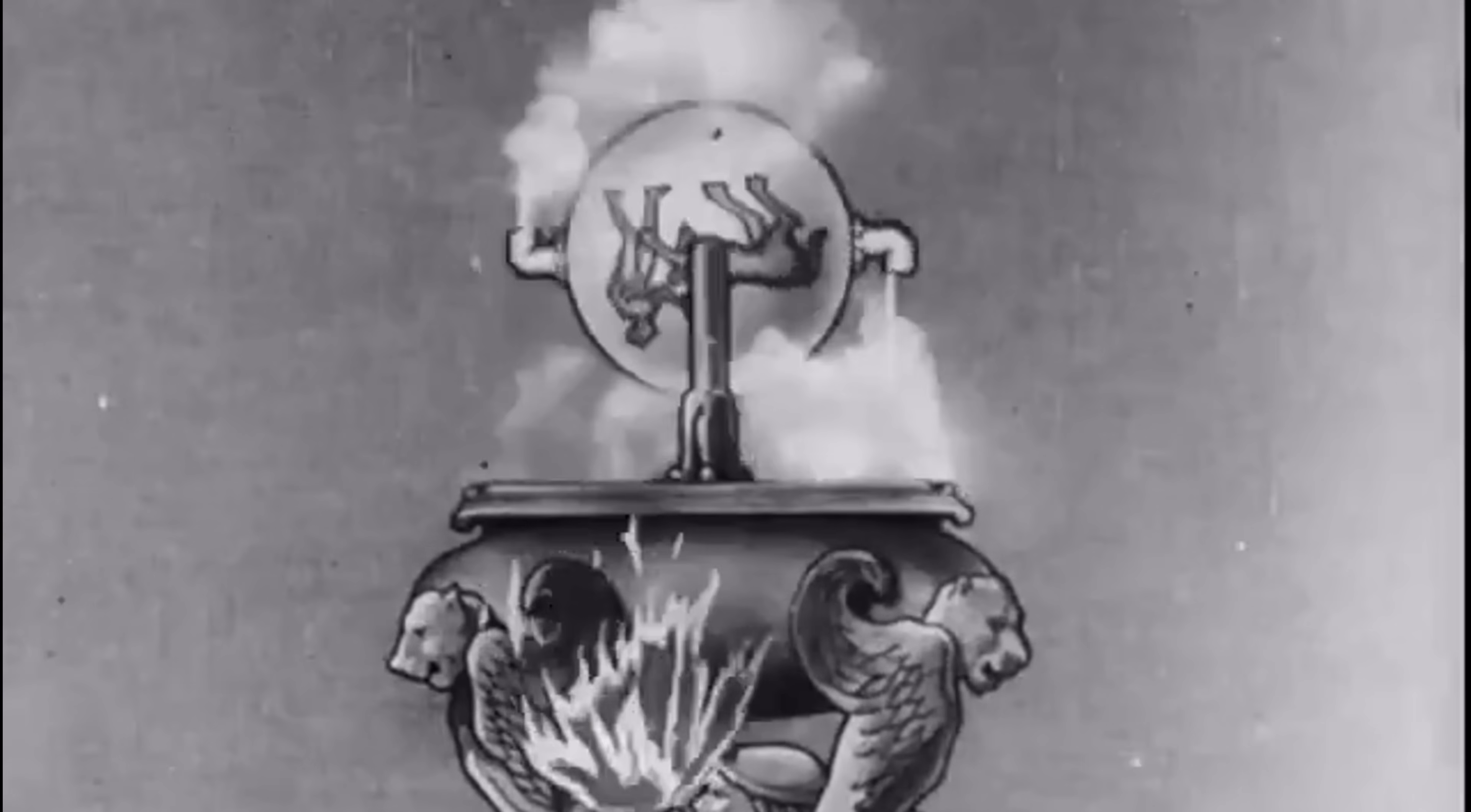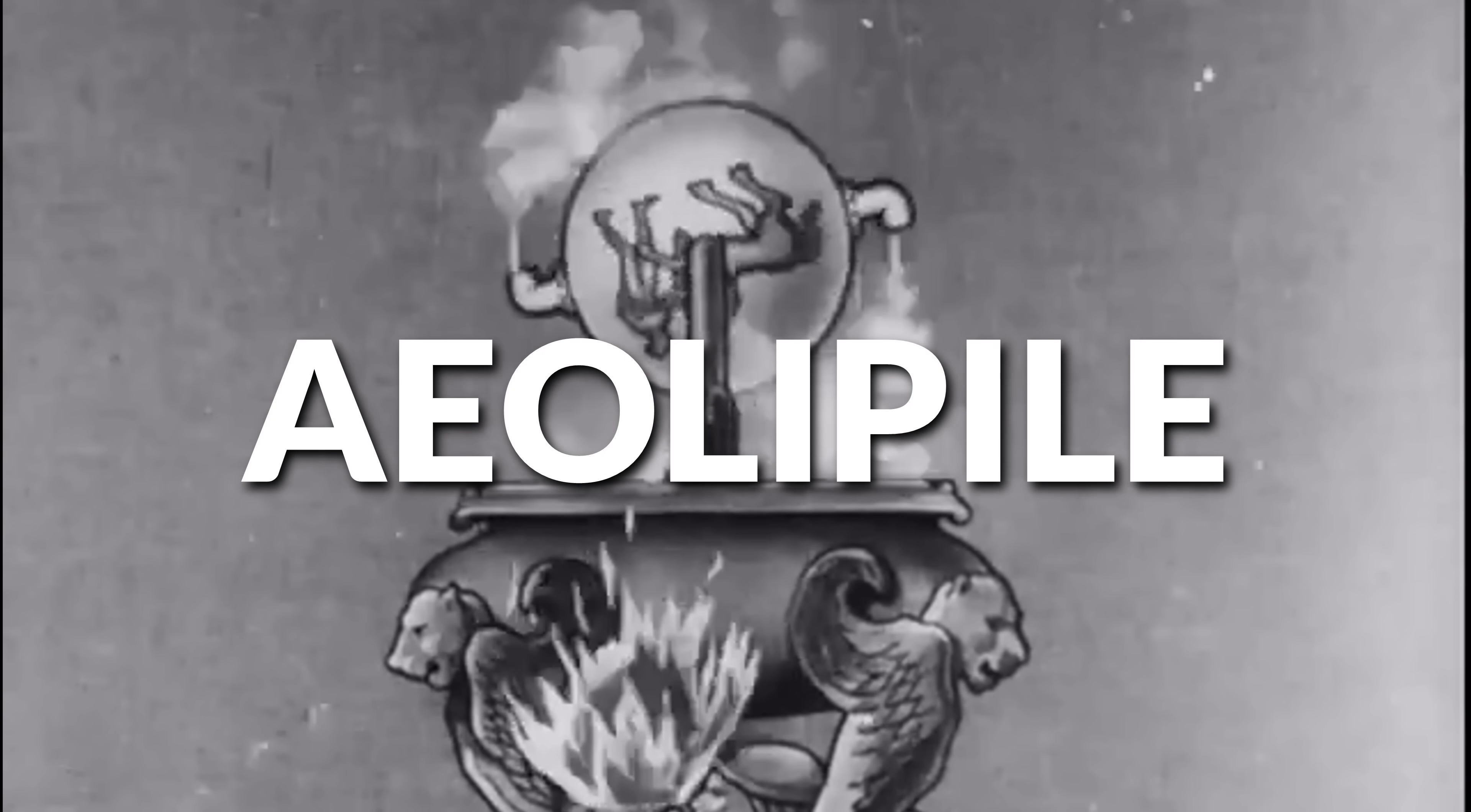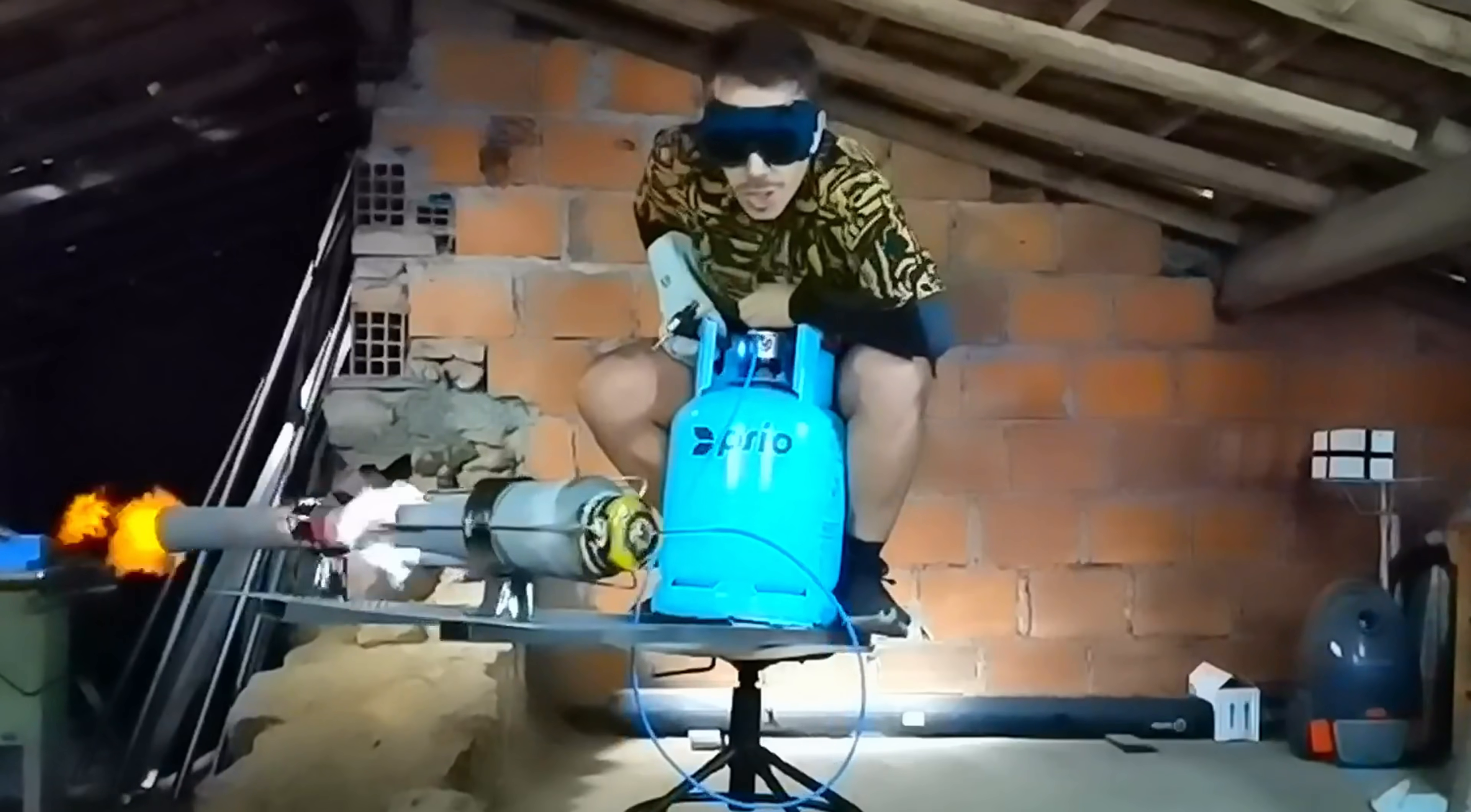This is actually a replica of a very old steam turbine designed in the 1st century AD called an aeolipile. I was just looking at this and this is basically a spinning rocket, like if you put a rocket around a pivot to make something spin. What if that something was a propeller?